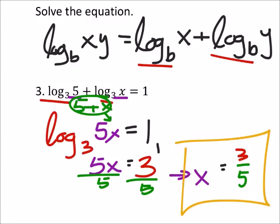Now you could put this in your calculator just to check. You'd have log of five over log of three plus log of three-fifths over log of three, and should get one.